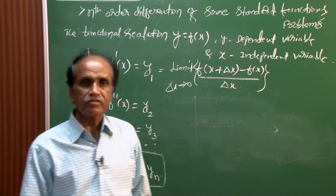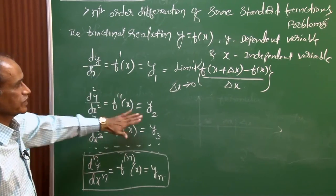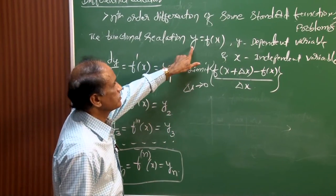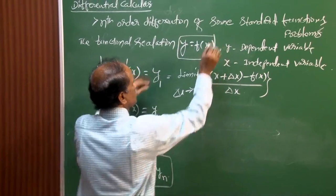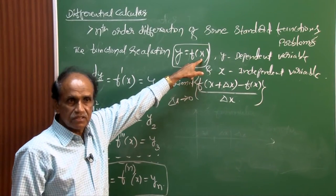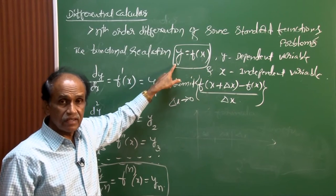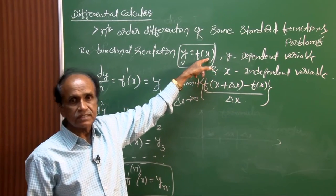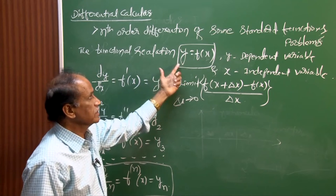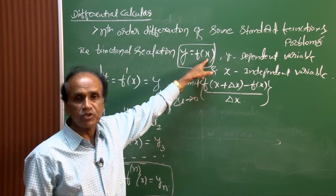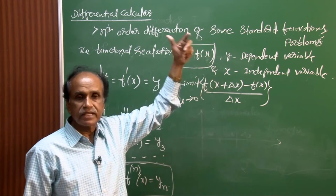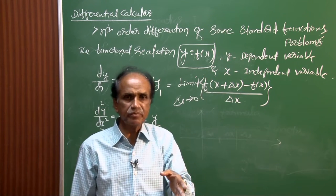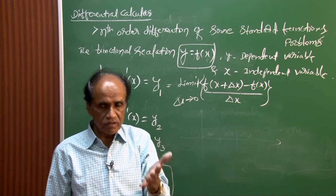This basic concept of differentiation must be known very well. In set theory, y is the domain and x is the range. Each value of x is the input — the independent variable — and the corresponding y depends on that input, so y is called the dependent variable.